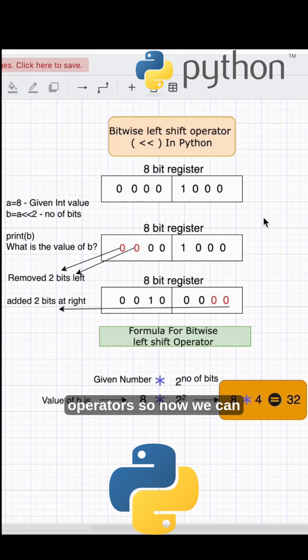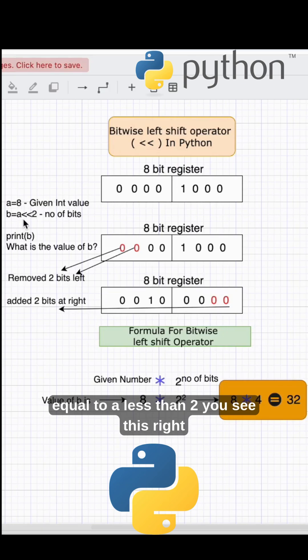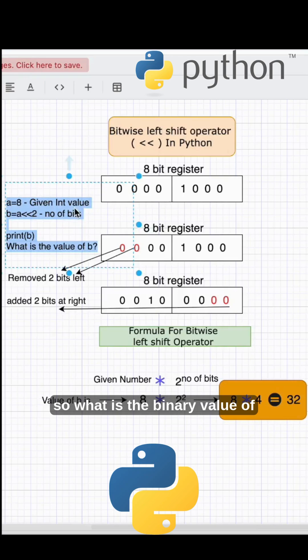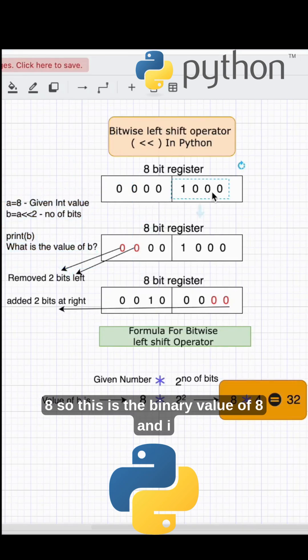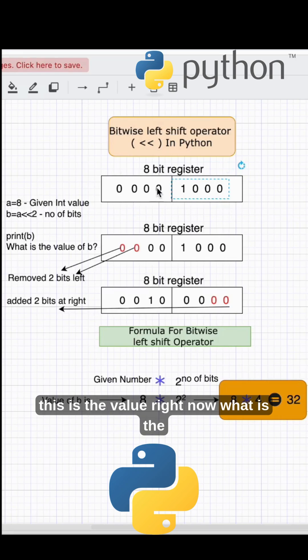Now we can consider this: a equals 8 and b equals a left shift 2. What is the binary value of 8? So this is the binary value of 8 and I have taken an 8 bit register. This is the value right now.